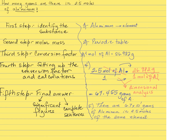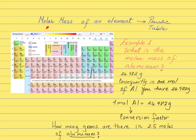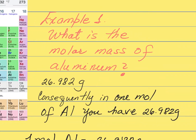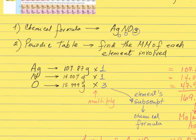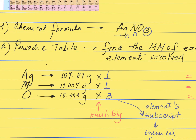Molar mass of an element: the only thing you need is the periodic table, because the atomic mass of the element expressed in grams is the amount of grams you're going to find in one mole of that element. For a compound, you also need the periodic table to find the molar mass of each element involved in the chemical formula. Once you have the chemical formula and the molar mass of every element — for example, silver, nitrogen, and oxygen — you gather those from the periodic table.